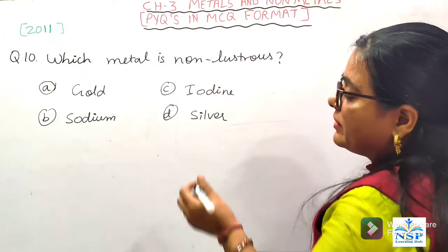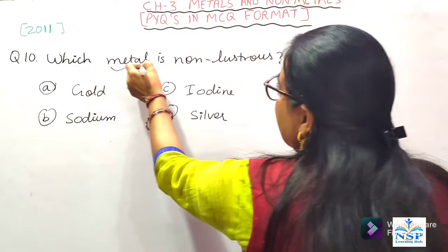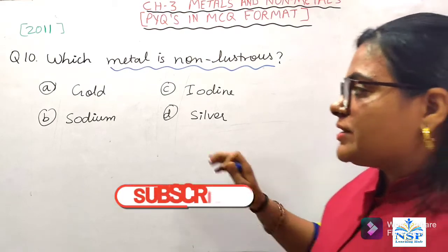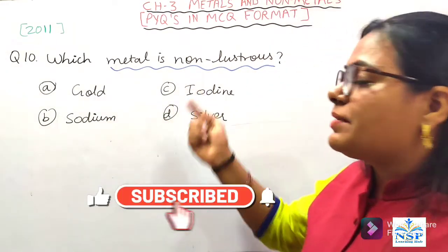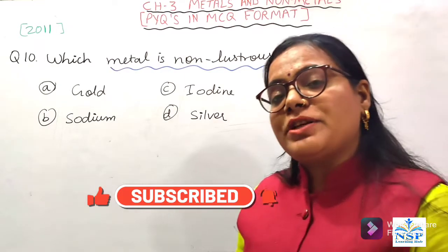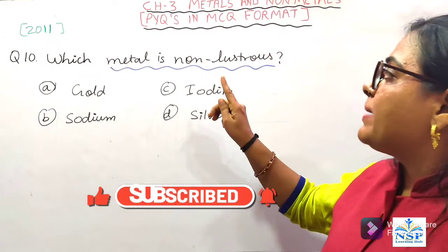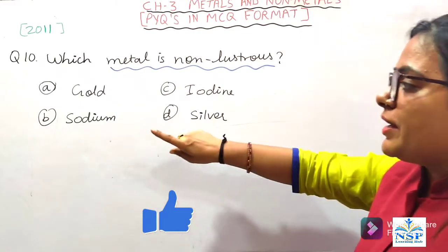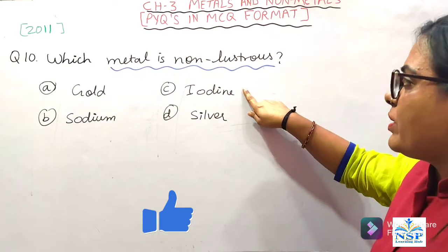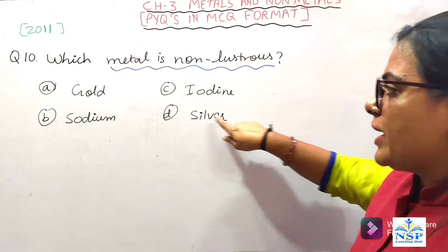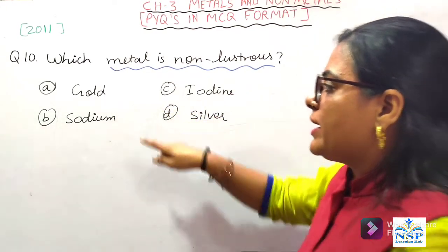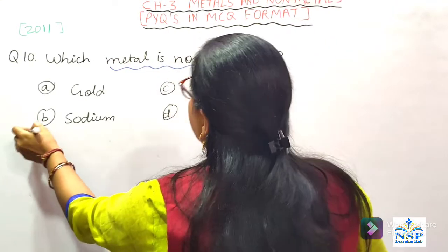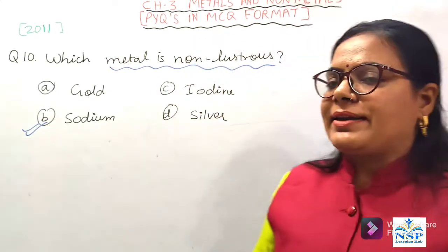Next question: which metal is non-lustrous? Generally हमने पिछले question में पढ़ा कि सभी metals lustrous होती हैं — उनमें shine होती है। लेकिन ऐसी कौन सी metal है जिसमें shine नहीं होती? Options: Gold, Sodium, Iodine (non-metal), Silver. आपके sodium में shine नहीं होती — यानि कि sodium आपका non-lustrous metal है।